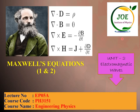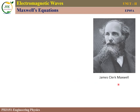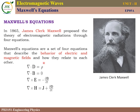You are watching Joe's Institute of Physics. This video lecture covers Maxwell's equations in Odia — first and second equation derivation, lecture number EP05A, course code PH3151, course name Engineering Physics. James Clerk Maxwell, in 1865, proposed one unified theory of electromagnetic radiation. He gave four equations that relate the electric and magnetic fields — these are the Maxwell equations.